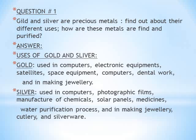Question number one: Gold and silver are precious metals. Find out about their different uses and how these metals are mined and purified. Answer — Uses of gold and silver: Gold is used in computers, electronic equipment, satellites, space equipment, dental work, and in making jewelry. Silver is used in computers, photographic films, manufacture of chemicals, solar panels, medicines, water purification process, and in making jewelry.